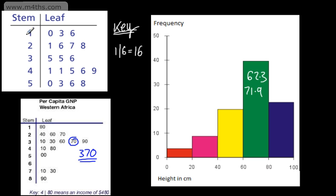Here the stem represents tens and the leaf represents units. We must make sure that a stem and leaf diagram is in order. So with this one, going from 10, 13, 16, 21, 26, 27, 28, right the way up to 58, with 50 here. We can't have 13, 10, and then 16 — or 26, 28, 21, 27. It must be in order.